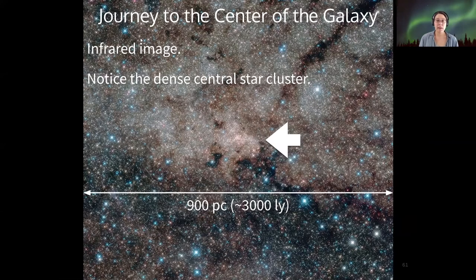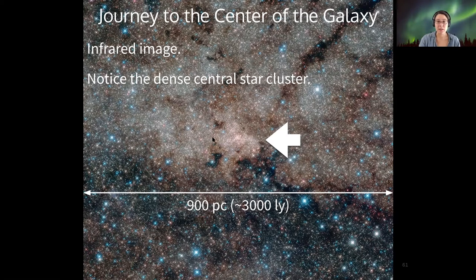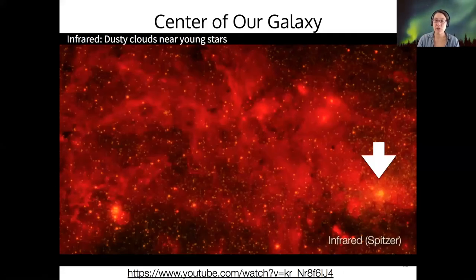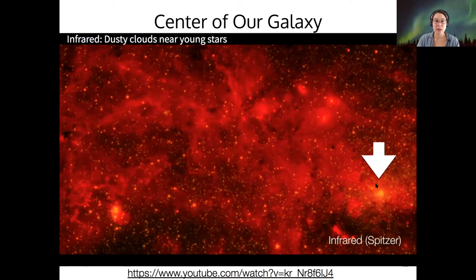If we look in the infrared, we can see at the center of our galaxy a dense star cluster. This particular image is about 3,000 light years in diameter. If we look in other wavelength ranges, we continue to notice that bright spot. This is now the location of that bright star cluster. As we zoom into the galaxy and look in different wavelength ranges, we see this bright spot appear in many different ranges.